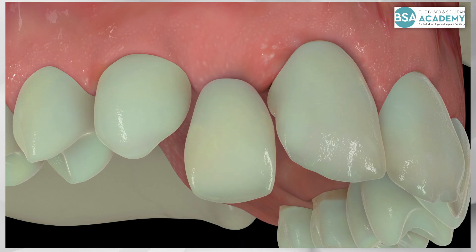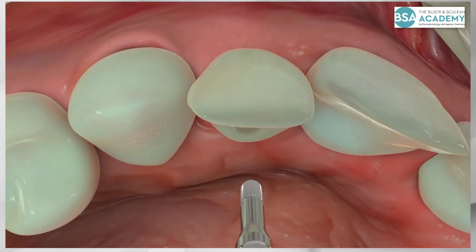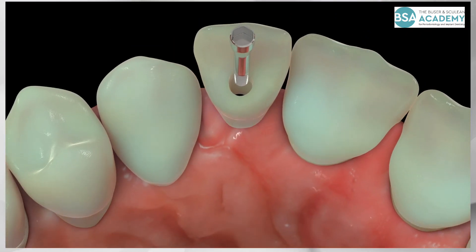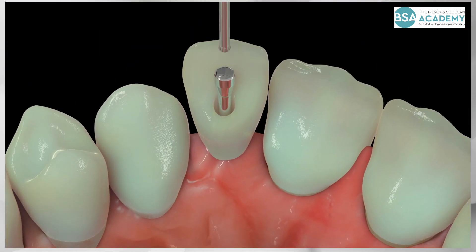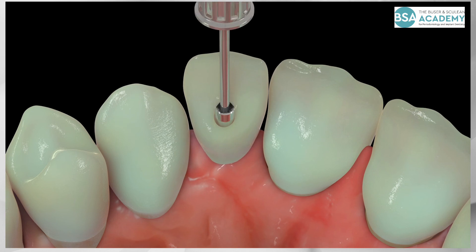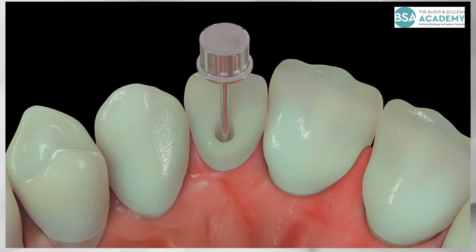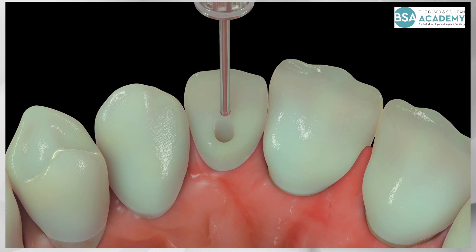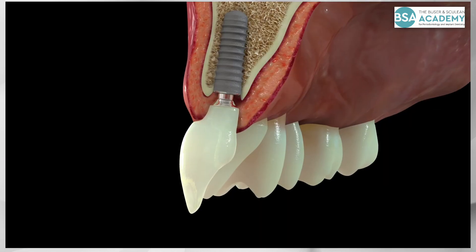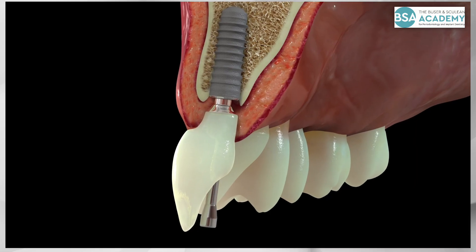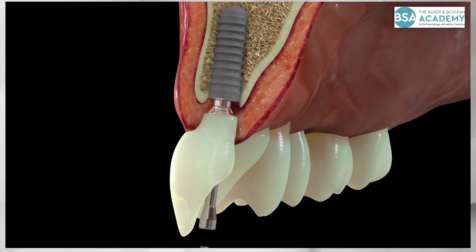Following a few days of soft tissue healing, the provisional crown is inserted to initiate the soft tissue conditioning. The sagittal view shows the seating of the provisional crown.